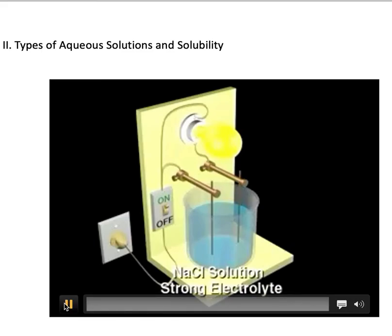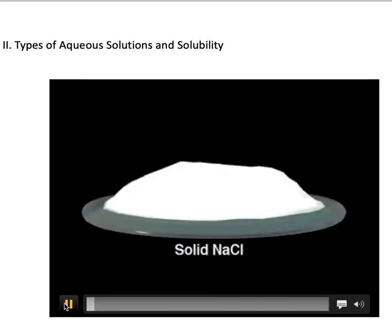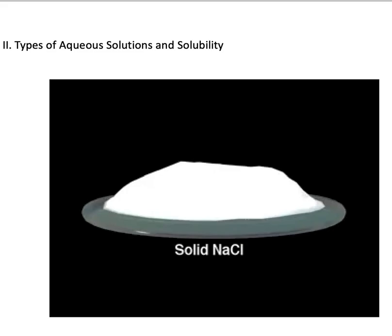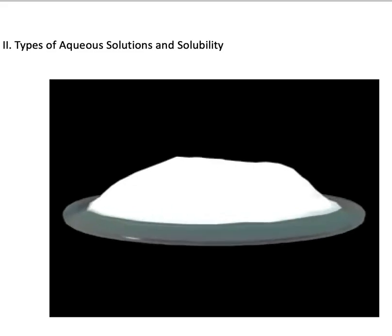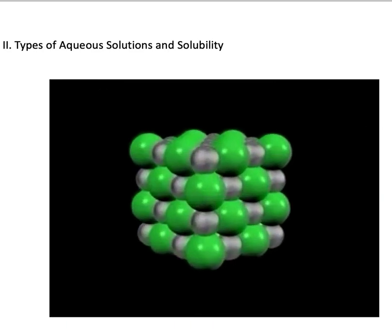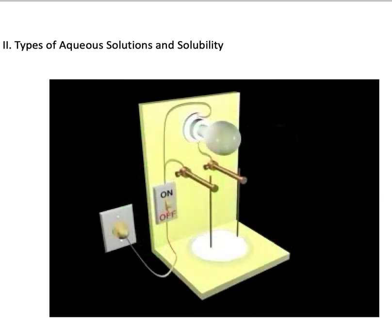We start types of aqueous solutions and solubility. We know from various lines of experimental evidence that solid sodium chloride consists of an ordered three-dimensional array of sodium and chloride ions. Solid sodium chloride is not a conductor of electricity — the ions of the ionic lattice are held in place by the strong ionic interactions in the solid and therefore are not free to move under the influence of the electric field.